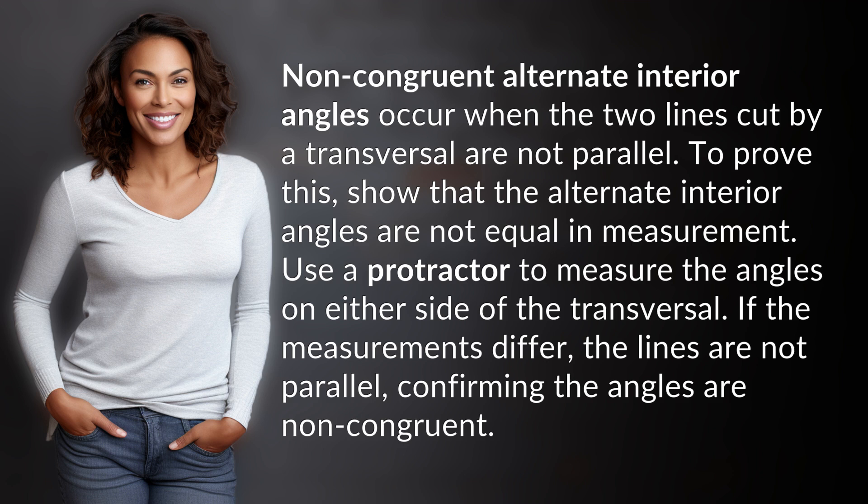Use a protractor to measure the angles on either side of the transversal. If the measurements differ, the lines are not parallel, confirming the angles are non-congruent.